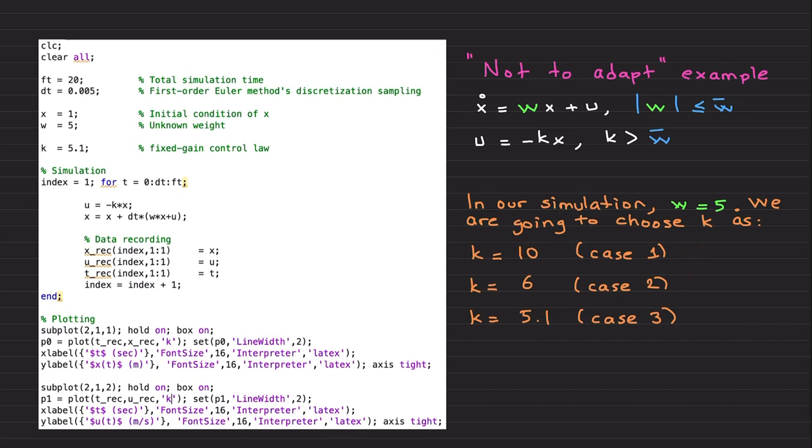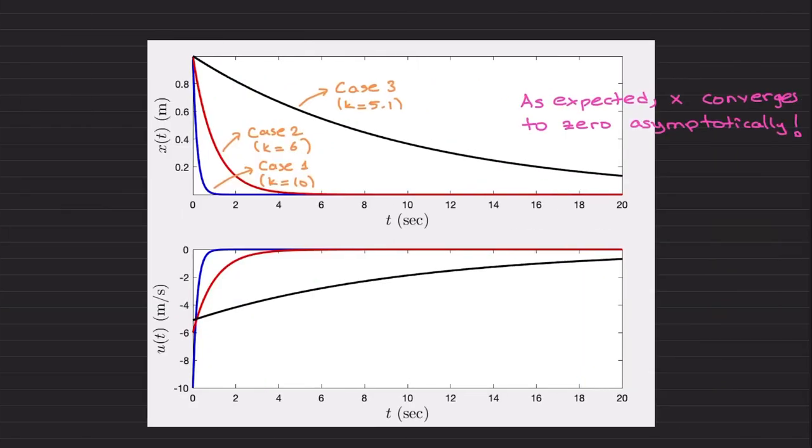Let's see what happens for these three cases. When you implement the controller for case 1 which uses k=10, you quickly stabilize the system like this blue curve. When you reduce your gain to 6, you have this red curve. When you choose 5.1 with a tighter bound on the uncertainty, your system slows down. System performance changes, but I am not going to make a big deal about that.